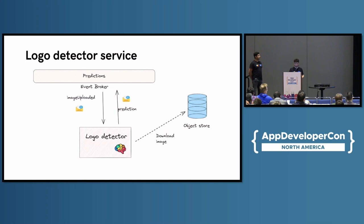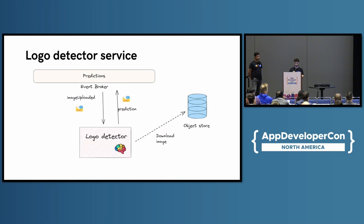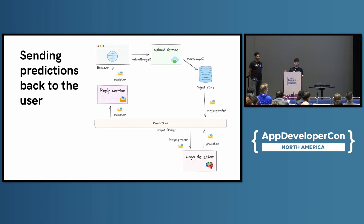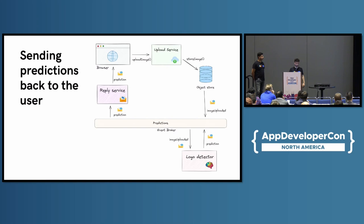The Logo Detector is the same service as before, but now just focused on detecting the actual logo in the images. What it does is receive a notification event from the object store through the event broker, and it responds by publishing a new event which contains the bounding box of where the logo is in the image, and also the confidence score. With the asynchronous architecture, you need some way to push the information to the user. To do that, we have a new reply service which is connected to the client or browser with WebSocket or HTTP/2, and pushes the prediction to the user so that we can correlate the uploaded images to the prediction.